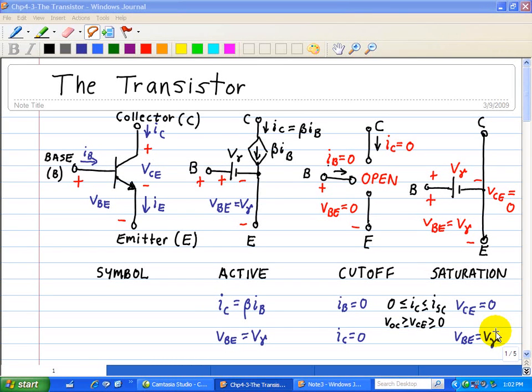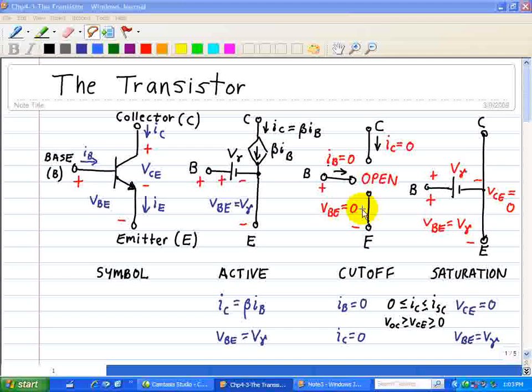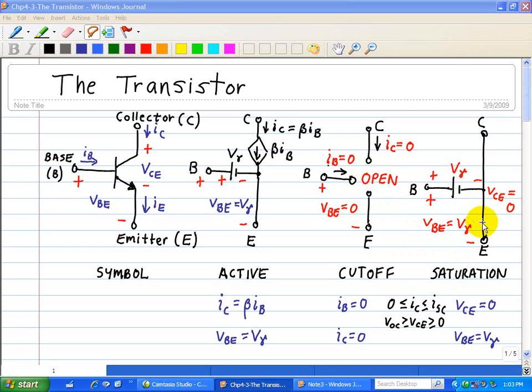This is what we have in our transistor when it is operating in one of these three modes: active, cutoff, or saturation. When looking at the cutoff and saturation regions, where the cutoff acts like an open and the saturation acts like a short, we have boundaries of the collector current where it's between zero and the short circuit current, and for the open circuit voltage, it's between VOC and zero.